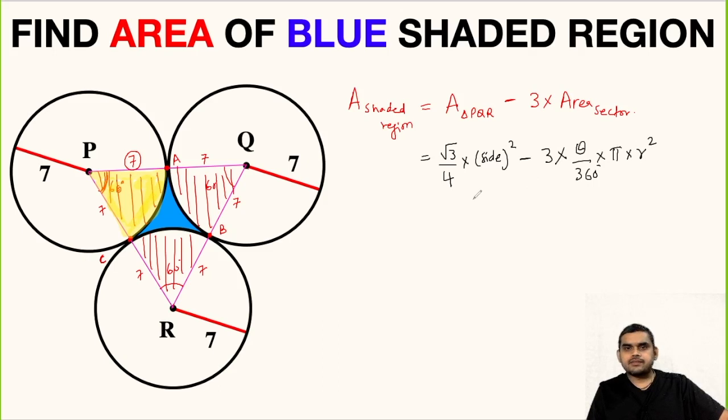So the formula is: theta upon 360 degrees, multiplied with pi times radius squared.